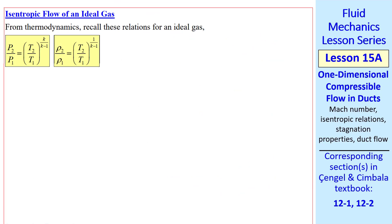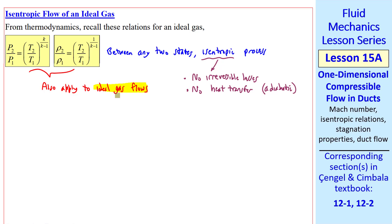Many of our flows can be approximated as isentropic. These relations for an ideal gas show the pressure ratio and the density ratio in terms of temperature ratio and the ratio of specific heats, K. These equations apply between any two states, 1 and 2, in an isentropic process. This requires no irreversible losses and no heat transfer, in other words adiabatic. These equations also apply to ideal gas flows.